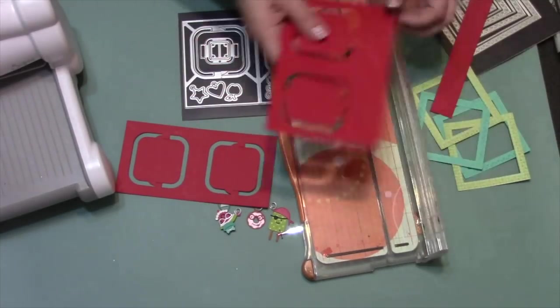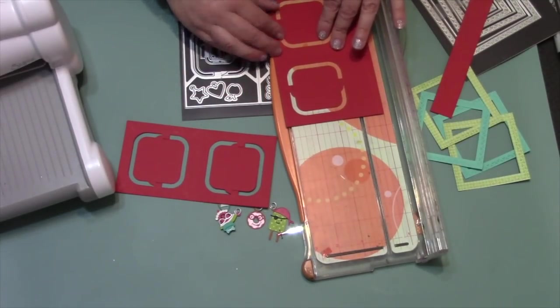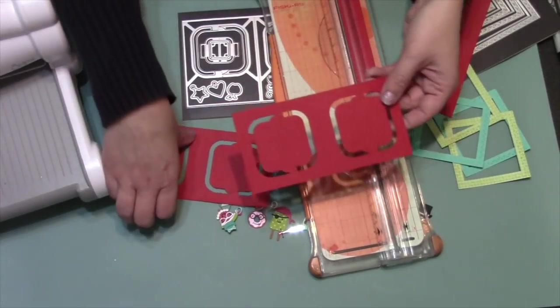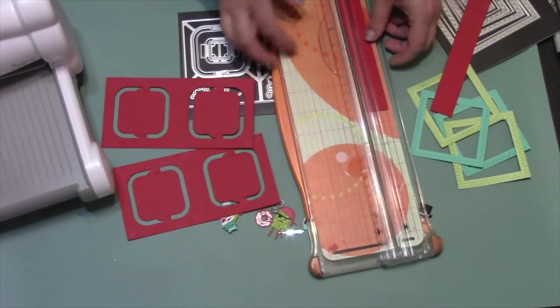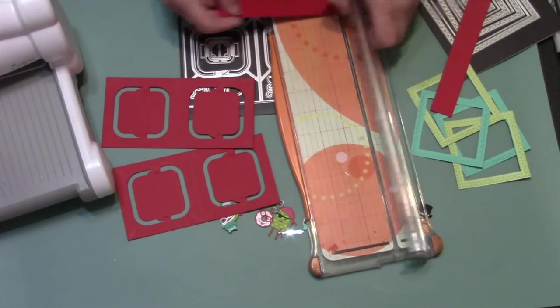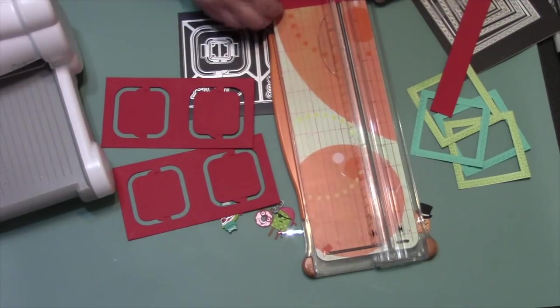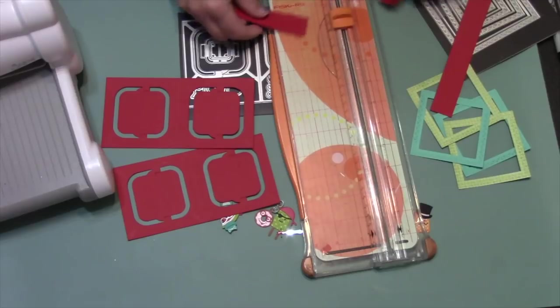Then just trim off the excess cardstock at the bottom, and I'll do that on both page sets. Now there is a hinge die that's included in the Charm Accordion for connecting page sets together. Another option that I'll use today is just to take that leftover cardstock, cut a piece that's 3 1/4 inches high.